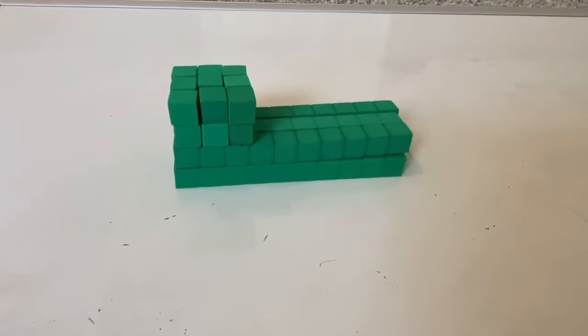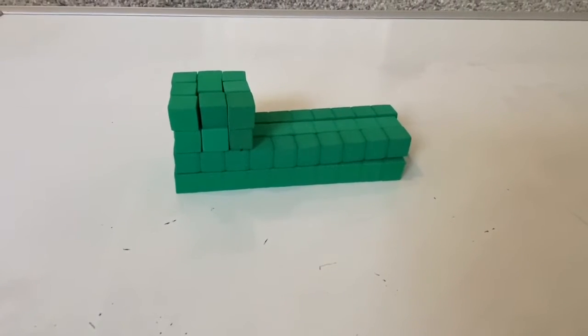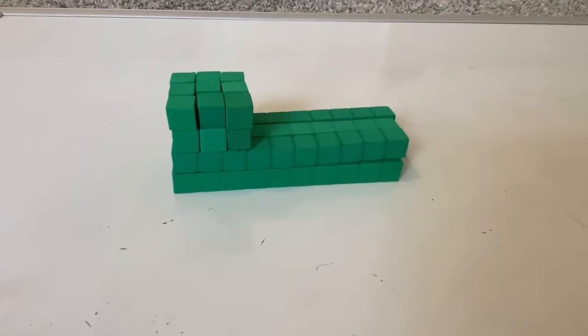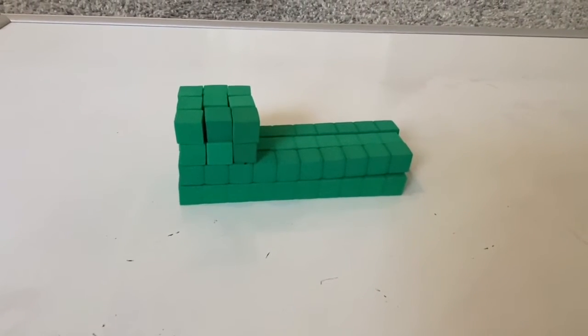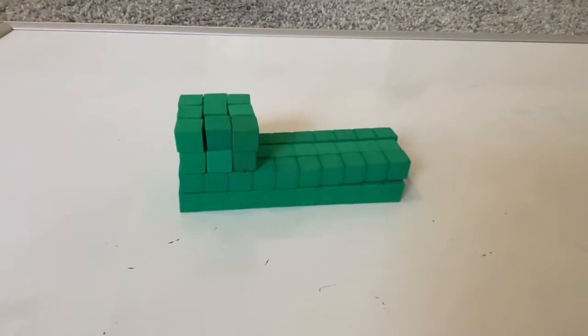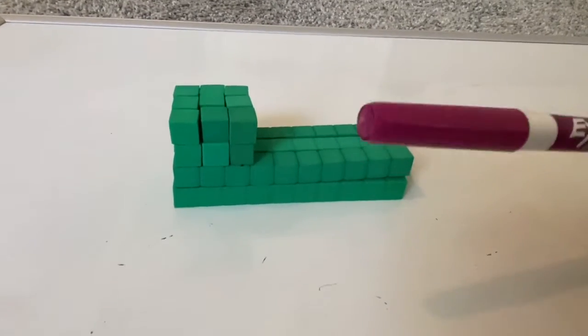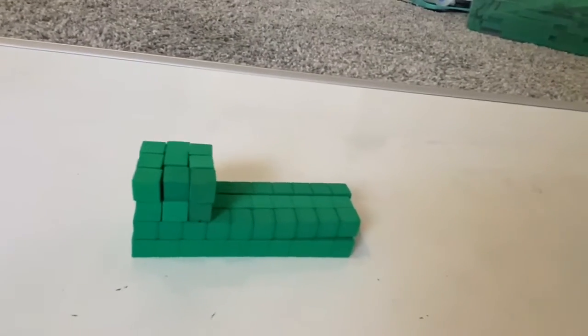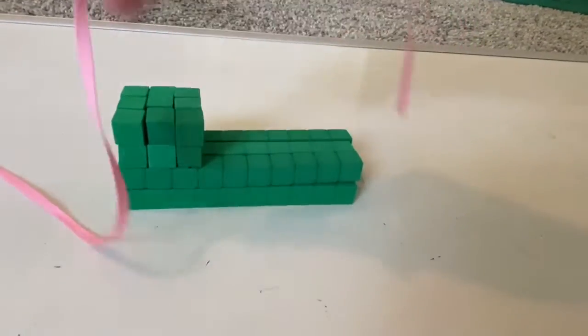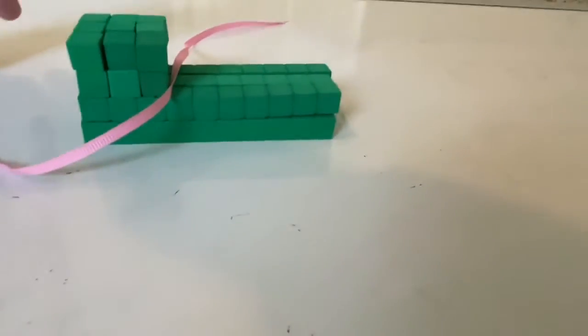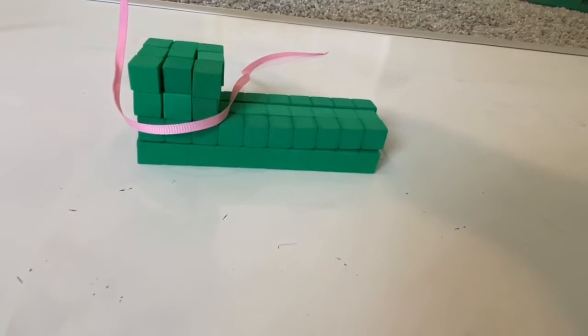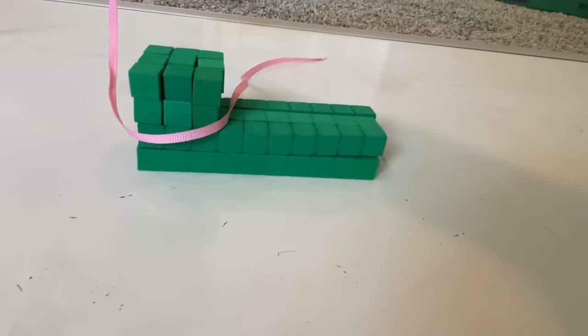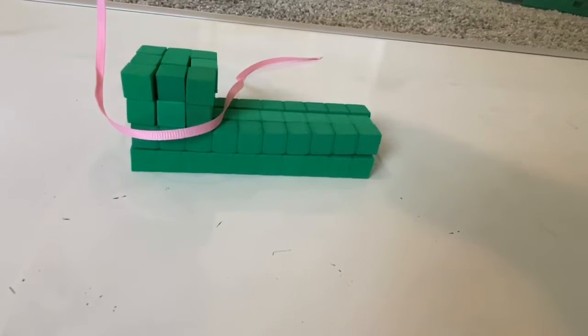We're going to start with our concrete model. I made this using base 10 blocks and you can see that I used 10 rods for the bottom figure and unit cubes for the top figure. So if we were to cut our figure here, we could see there's a top figure, figure A we could call it, and a bottom figure, figure B.